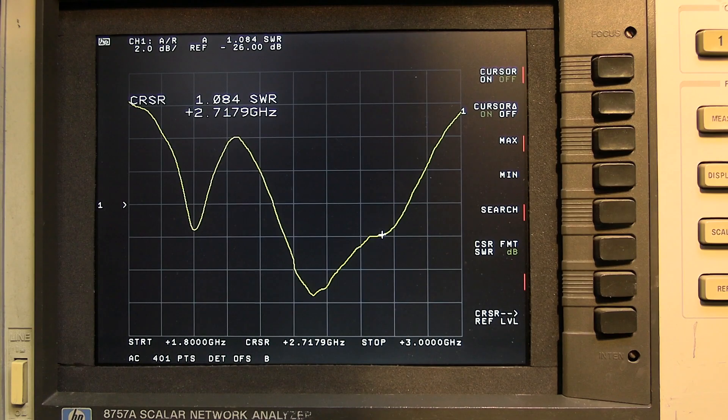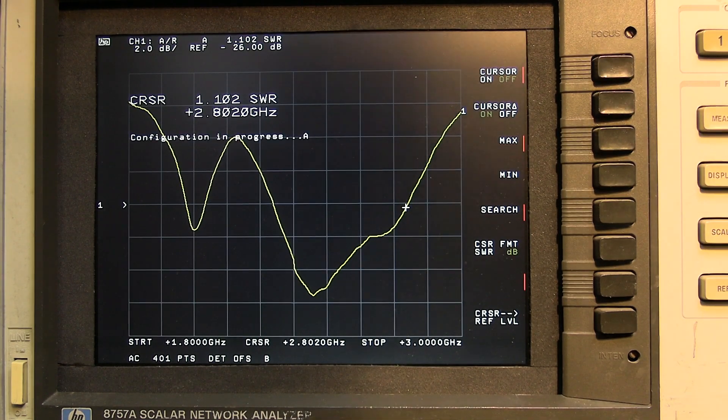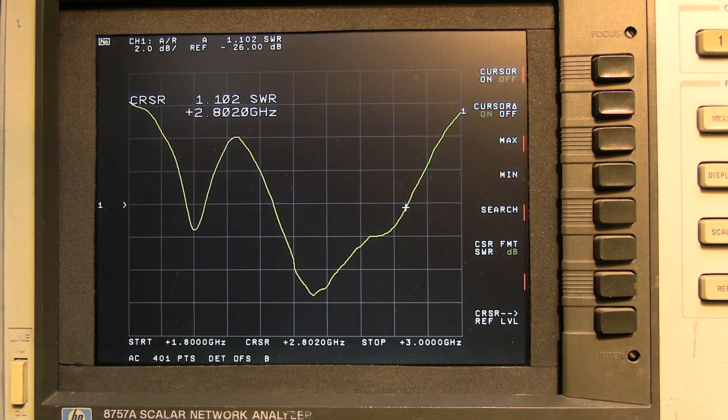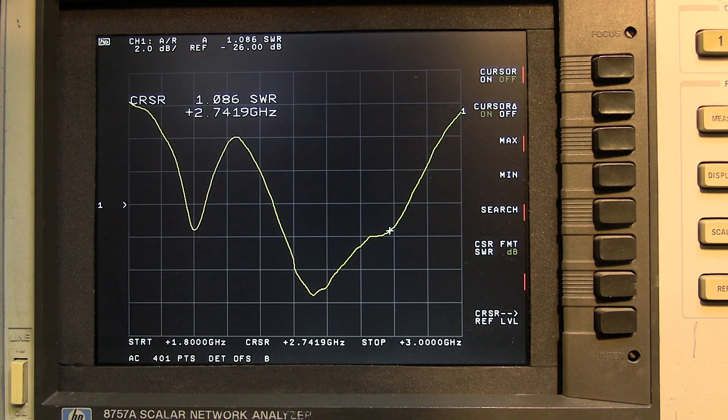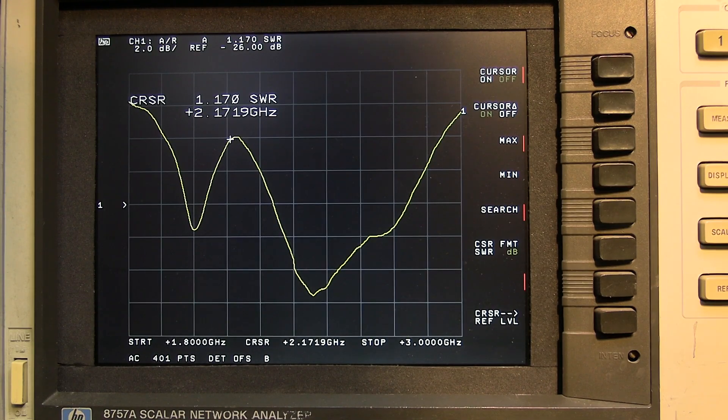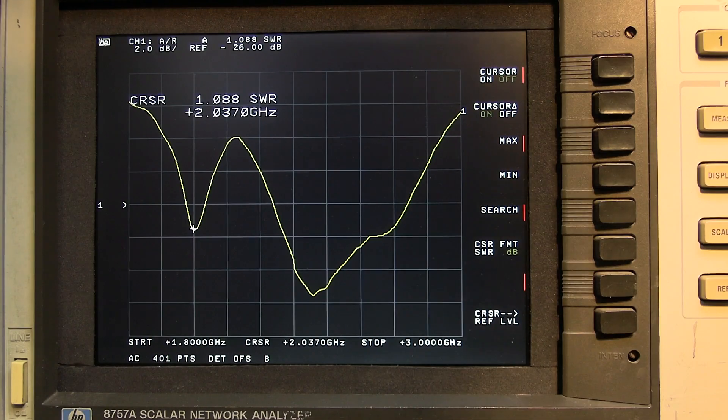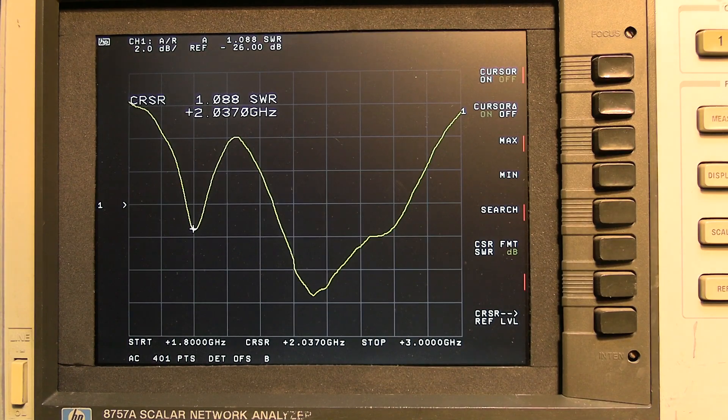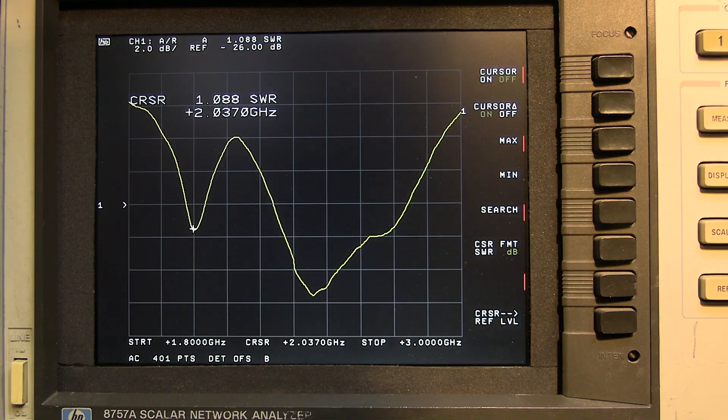But you can see how the return loss jumps up as we go further up the spectrum there. At 2.8 GHz there, we're getting into a really poor return loss, but just look how wide it is. And then we've got this second harmonic here, which is at 2 GHz. Again, the return loss is 1.088, which again, is not bad at all. And yeah, I mean, it is a WiFi antenna, it's not for cellular networks.